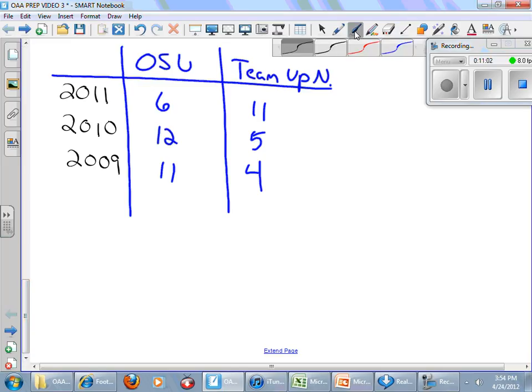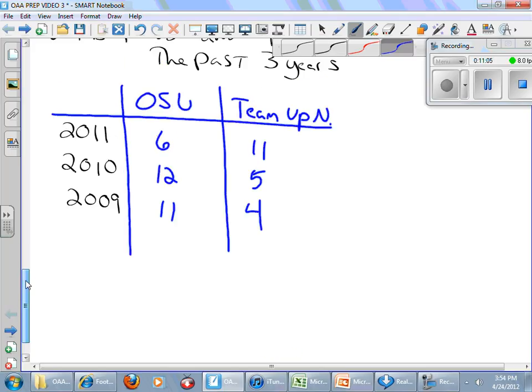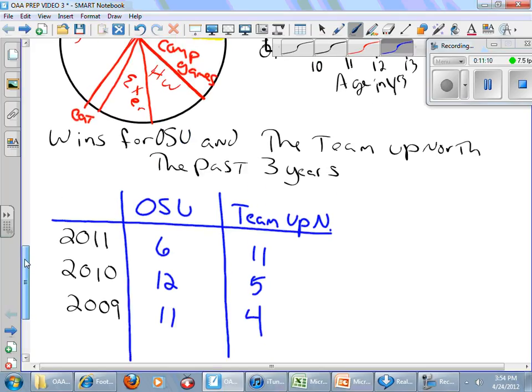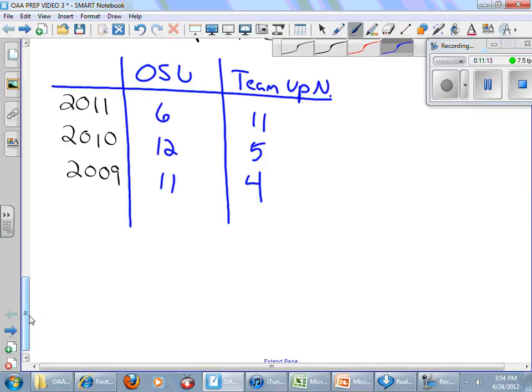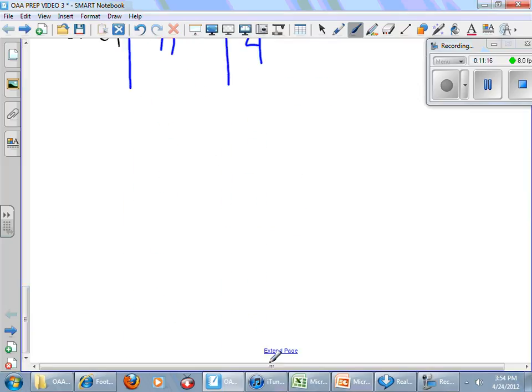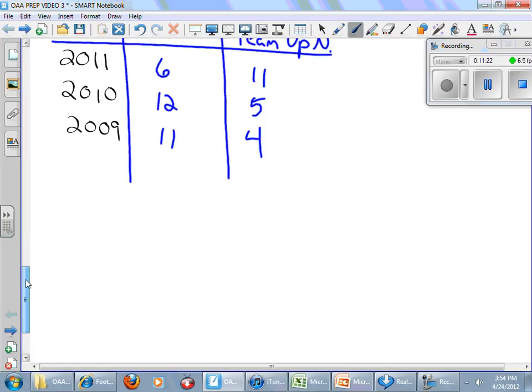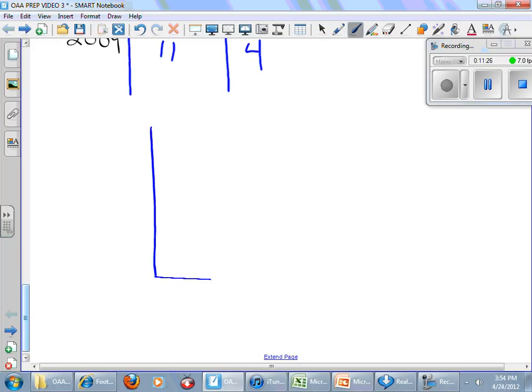All right. Here's one with the past three years. The number of wins for Ohio State and that team up north. Okay? And on this one, I might do a stem and leaf plot. Or, actually I was thinking a double bar graph. I think I'm going to go double bar graph on this. So, I might have the years. All right. The seasons. Oops. Those didn't separate. Let me lower that. Years. And then a number of wins.